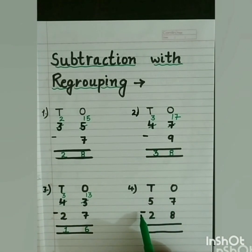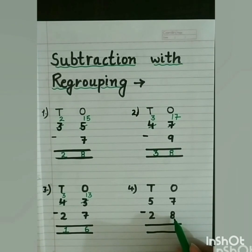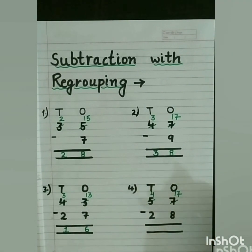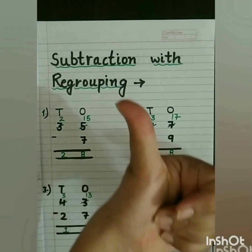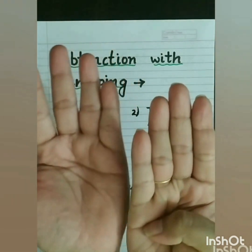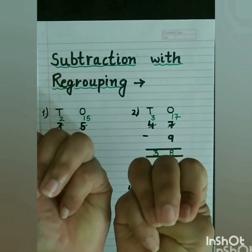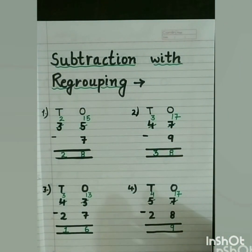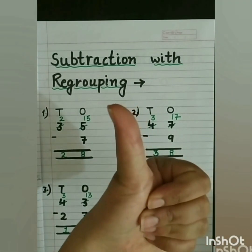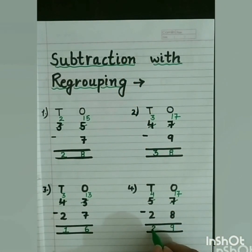Last sum: 57 minus 28. Start from the ones place. 7 minus 8 is not possible, so we borrow from tens place. 5 becomes 4 and 7 becomes 17. Now 17 minus 8: after 8, count till 17 — 9, 10, 11, 12, 13, 14, 15, 16, 17 — that is 9. So we write 9. Now 4 minus 2: after 2, count till 4 — 3, 4 — that is 2. So we write 2. The answer is 29.